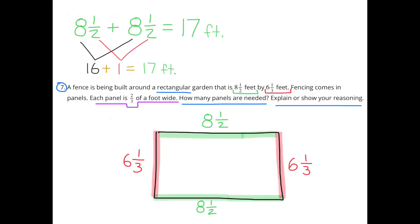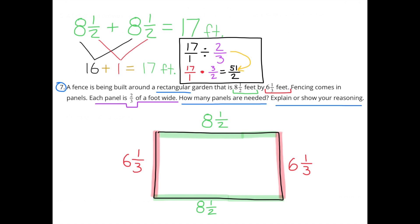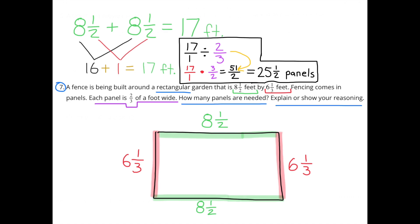Number 7: A fence is being built around a rectangular garden that is 8½ feet by 6⅓ feet. Fencing comes in panels — each panel is 2/3 of a foot wide. How many panels are needed? The length of 8½ feet is represented in green, and 6⅓ feet in red. 8½ plus 8½ equals 17 feet. We divide 17 by 2/3 by multiplying by the reciprocal: 17 times 3/2 equals 51/2, or 25½ panels for the two green sections.